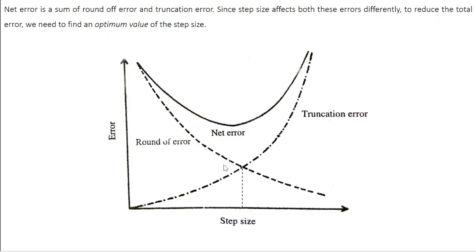Looking at the error versus step size graph: when step size increases, the round-off error decreases while the truncation error increases. You cannot choose a very small step size, because the truncation error decreases but the round-off error increases drastically. Similarly, you cannot choose a very large step size, because even though round-off error is small, the truncation error increases drastically. The total error is minimum at a particular step size, which is the optimum step size.